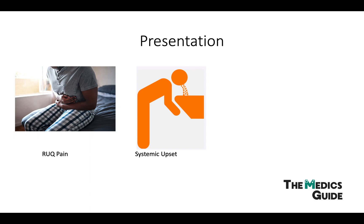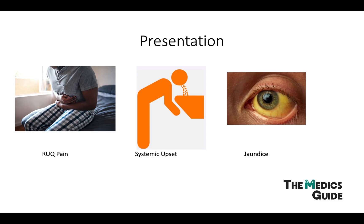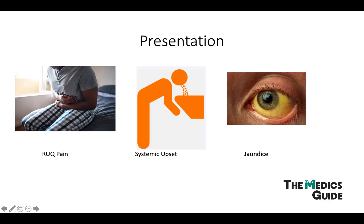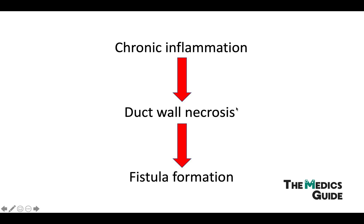The presentation of Mirizzi's syndrome is actually really similar to acute cholecystitis but with the addition of jaundice. This is because the obstructed duct can no longer let bile pass through. Going back to the picture, we can see bile can no longer pass through, and as a result it back-flows. When it back-flows there's a significant pressure build-up, and eventually the bile will leak through the endothelial cells lining the ducts and then go into the blood.